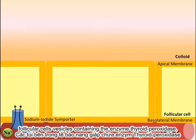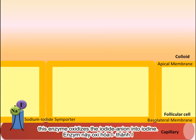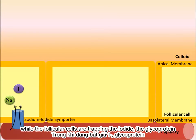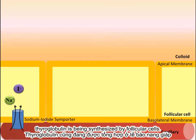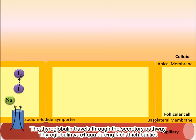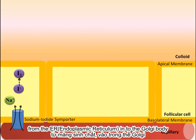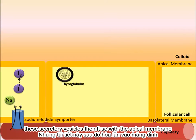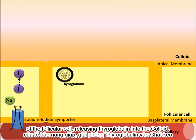Follicular cell vesicles contain the enzyme thyroid peroxidase, which oxidizes the iodide anion into iodine. While the follicular cells are trapping the iodide, the glycoprotein thyroglobulin is being synthesized by follicular cells. The thyroglobulin travels through the secretory pathway from the ER into the Golgi body and is packaged into secretory vesicles. These secretory vesicles then fuse with the apical membrane of the follicular cell, releasing thyroglobulin into the colloid.